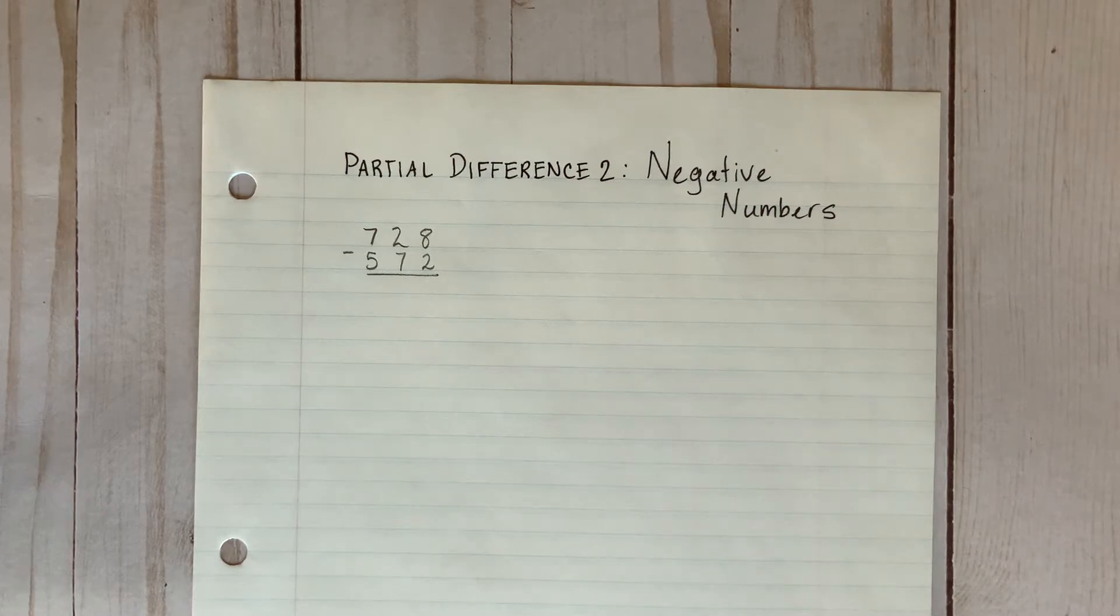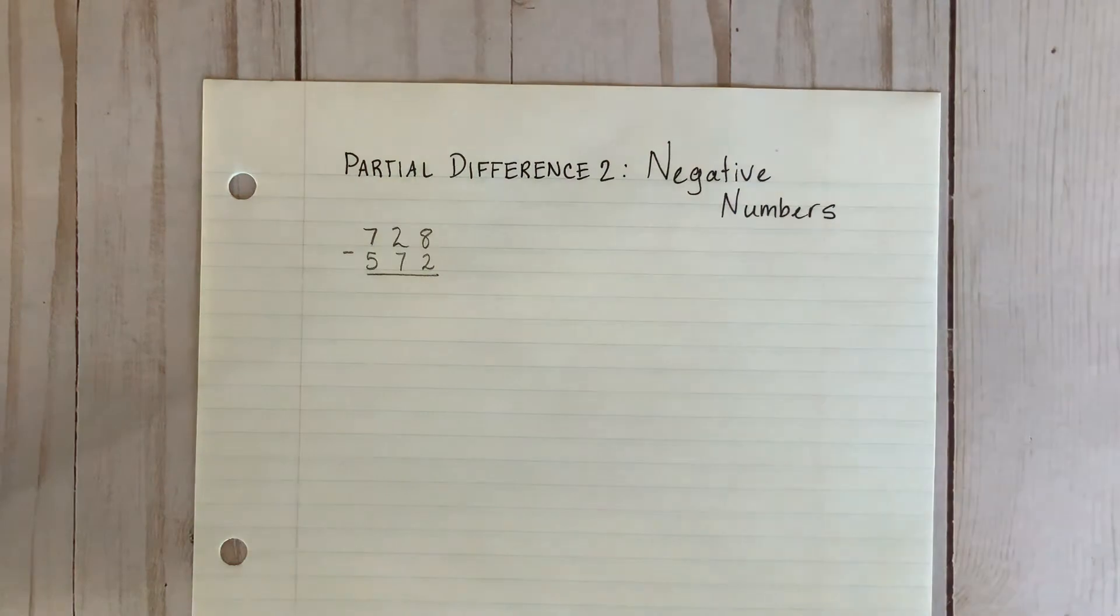A common mistake that many students make when using the standard algorithm is starting on the left when they need to start on the right. With this method, if you would like to start on the left, it will not affect the outcome.